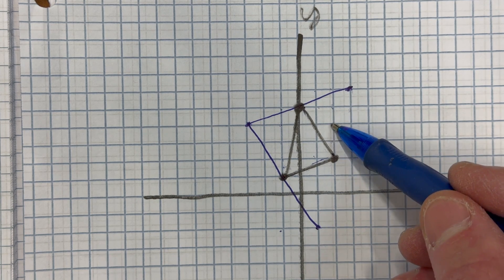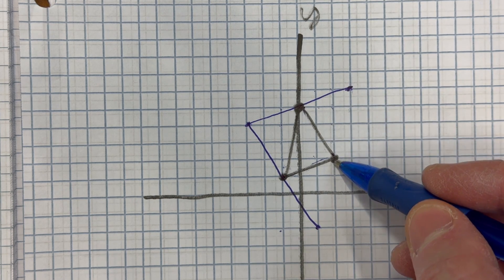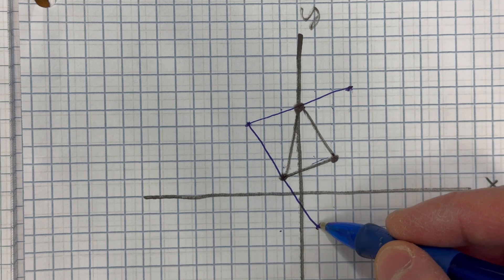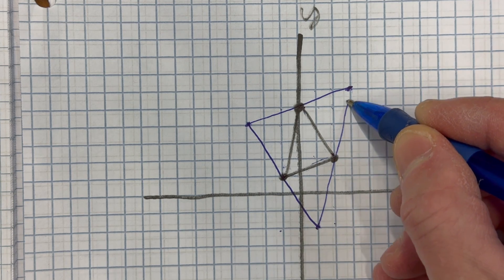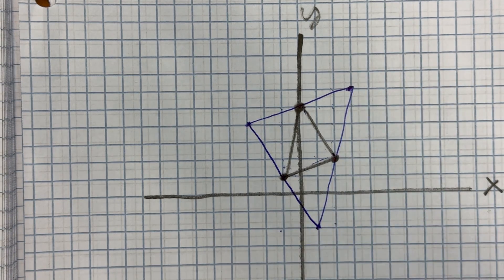So if I repeat that, rise four, run one, or I could go down four, left one. But you can see we already have those vertices of the triangle.